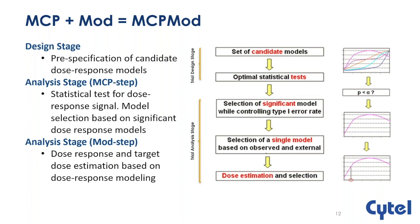Schematically, the MCP-MOD procedure involves the following steps. At the design stage, we identify several candidate dose-response shapes likely to represent the true underlying dose-response relationship. We then derive optimal contrast coefficients such that the marginal power to detect the specific dose response is maximized. Moving into the analysis part, we evaluate the significance of individual shapes using a multiple contrast test to assess whether a dose-response signal can be detected. Next, we select the candidate model using AIC, BIC, or model averaging. Finally, the chosen model is used to produce inference on the adequate doses.